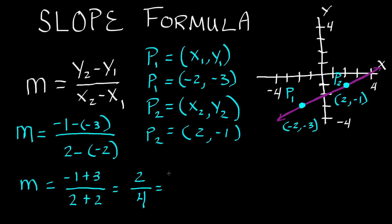So 2 over 4 now can be reduced. So 2 is the same thing as 2 times 1. And 4 is the same thing as 2 times 2. So now our 2 and 2 cancel right here. Leaving us with a slope of 1 half.